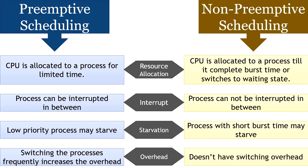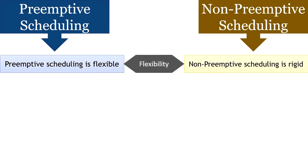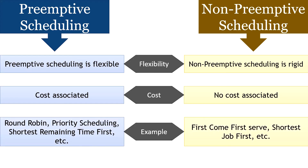Primitive scheduling has the overhead of switching processes between the ready and running states, whereas non-primitive scheduling has no such overhead. Primitive scheduling is flexible because critical processes can access the CPU as soon as they arrive, regardless of what is currently executing. Non-primitive scheduling is rigid since the currently running process is not interrupted even when a critical process enters the ready queue. Primitive scheduling is cost-associative as it must maintain the integrity of shared data, which is not the case with non-primitive scheduling.